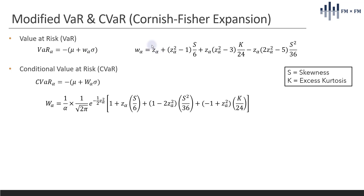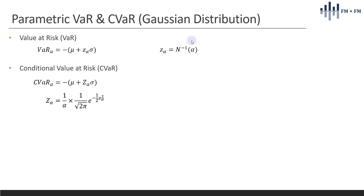We start with the standard normal variable Z based on alpha, and then the next three terms incorporate the skewness and excess kurtosis. Excess kurtosis is kurtosis minus three. If the distribution is normal, meaning skewness is zero and excess kurtosis is zero, we fall back to the parametric VAR based on the Gaussian distribution from the previous video.